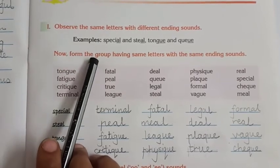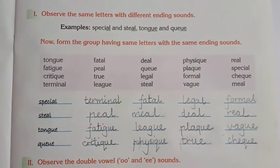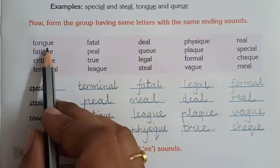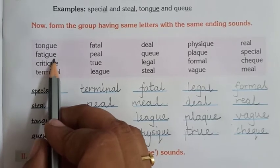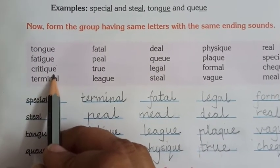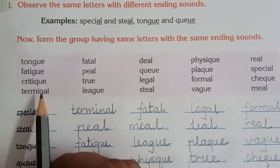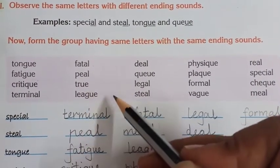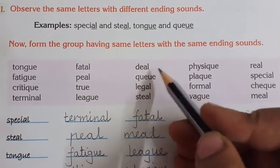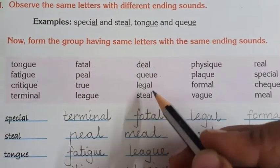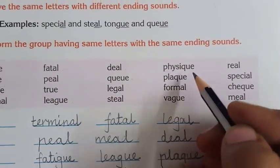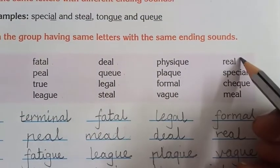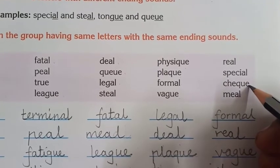Now form the group having same letters with the same ending sounds. Ma'am is going to read the words and you will repeat after me. The words are: tongue, fatigue, retique, terminal, fatal, peel, true, leak, deal, legal, steel, physics, speak, plank, formal, wake, real, special, check, meal.